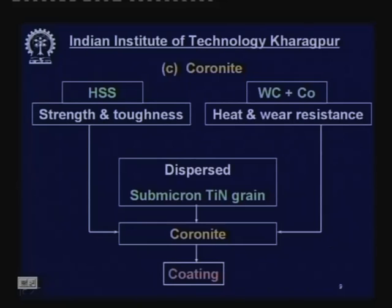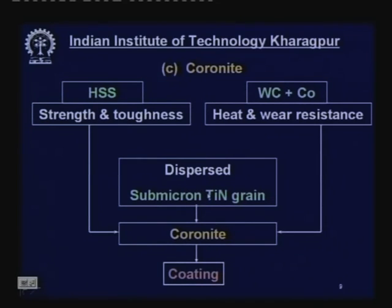Coronite is a very recent development. High speed steel has unique properties like very good tensile strength and toughness, while tungsten carbide and cobalt have heat and wear resistance. These two are combined to derive benefits from both. Additionally, submicron-level titanium nitride grains are dispersed throughout the matrix of high speed steel combined with tungsten carbide and cobalt, making it very wear resistant, heat resistant, strong, and tough. The tool is further coated with titanium nitride or titanium aluminum nitride.